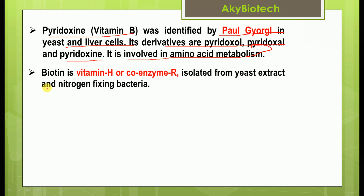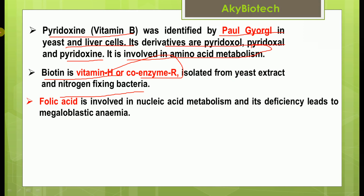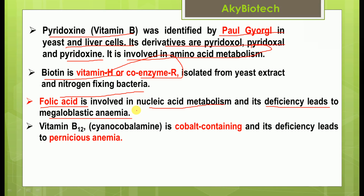Biotin is vitamin H or coenzyme R, isolated from yeast extract and nitrogen-fixing bacteria. Folic acid is involved in nucleic acid metabolism and its deficiency leads to megaloblastic anemia. Vitamin B12, cyanocobalamin, is cobalt-containing and its deficiency leads to pernicious anemia — also a very important examination point.